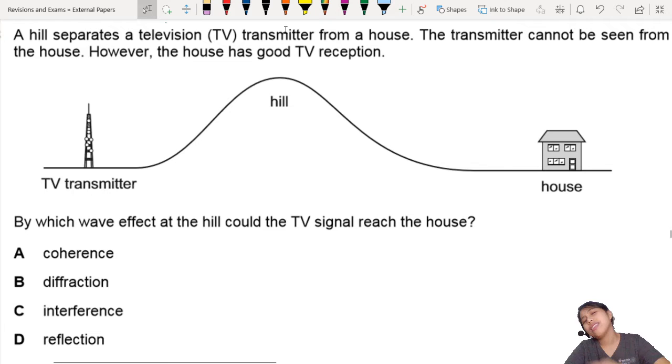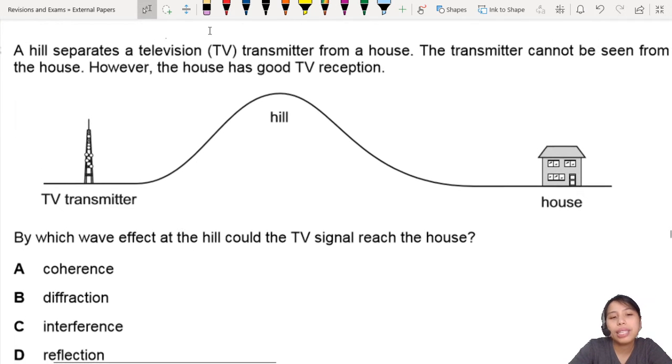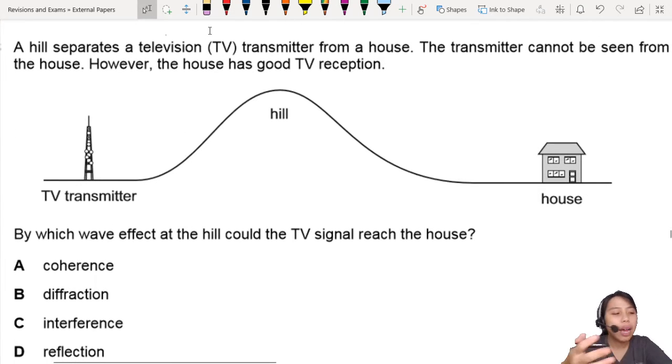Now, if you think about this, this is very common, not only for TV. I know TV is a bit out of date nowadays, but your phones, when you want 4G line, you want internet, there are towers placed around your house somewhere out there, and the waves will somehow reach you.